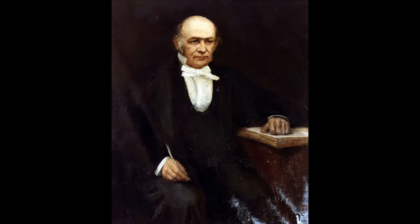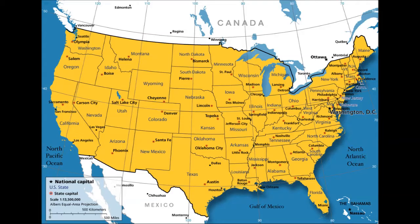The traveling salesman problem, or TSP, is a classic computer science problem that was first defined by William Hamilton in the 1800s. Its focus is to find the shortest route between any number of cities. But what is it exactly, and how do we solve this problem?